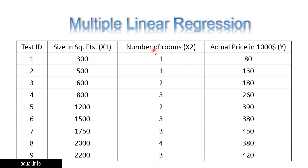A 300 square feet house with one room can cost around 80,000 dollars. A 500 square feet house with one room can cost around 130,000 dollars. A 600 square feet house with two rooms can cost around 180,000 dollars. This is the sample data where size of the house and number of rooms are given along with prices. This is supervised learning — right answers are given and you need to find more right ones.